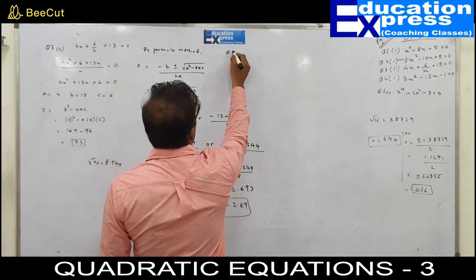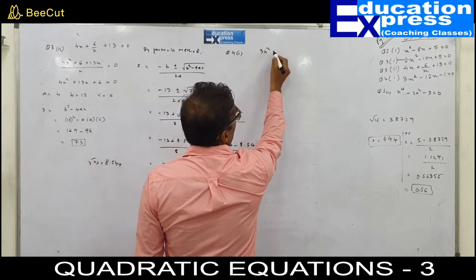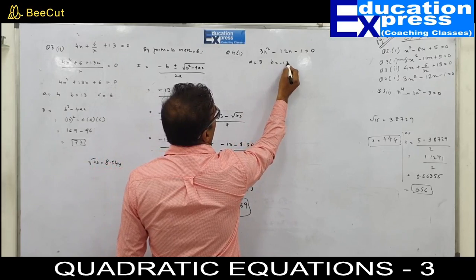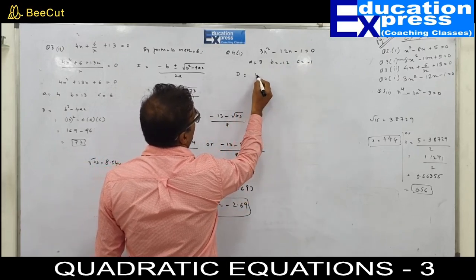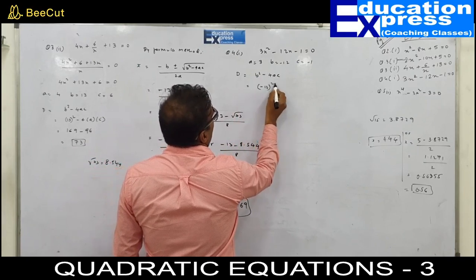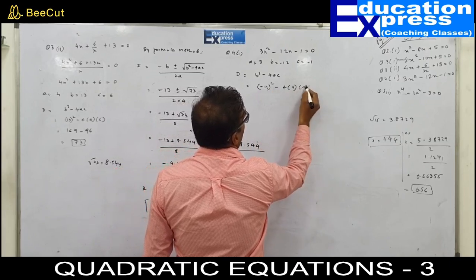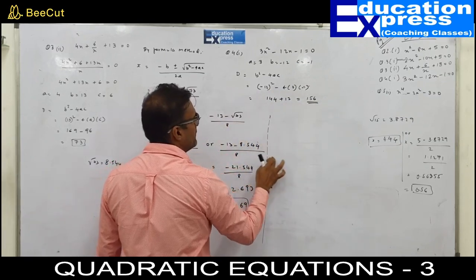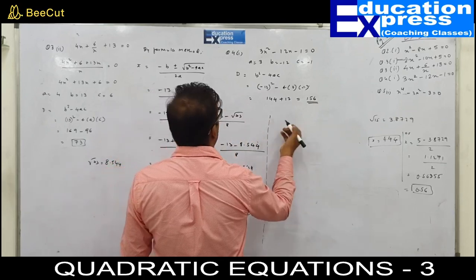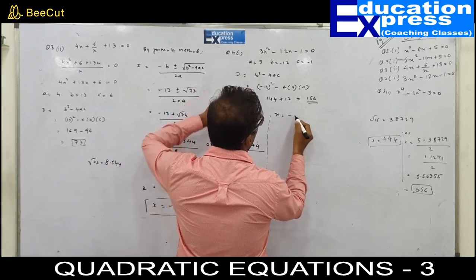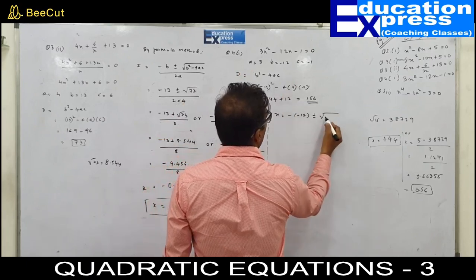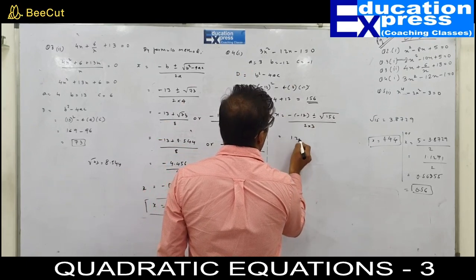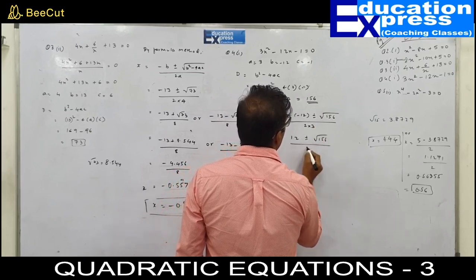Let's move on. Question number 4, part 1: 3x squared minus 12x minus 1 equals to 0. The question is given in standard form. Value of A would be 3, B would be minus 12, C would be minus 1. The discriminant B squared minus 4AC: minus 12 squared minus 4 into 3 into minus 1, gives 144 plus 12, that is 156. By formula, x equals minus B plus or minus root 156 upon 2A, which is 12 plus or minus root 156 upon 6.